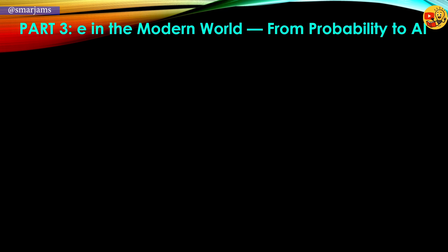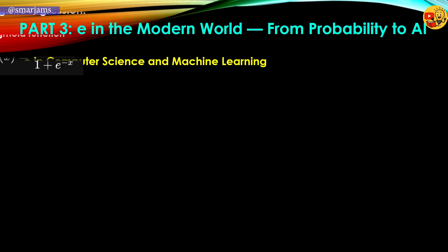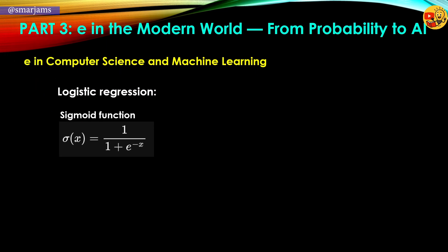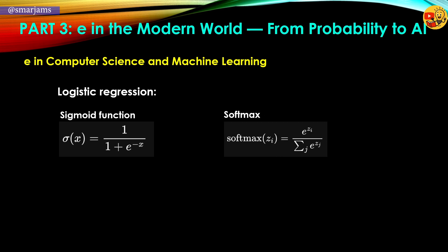In machine learning and artificial intelligence, e shows up even more vividly. The sigmoid function — 1 divided by (1 + e to the negative x) — allows machines to make binary decisions with probabilities. In multi-class classification problems, the softmax function turns raw prediction scores into a smooth probability distribution, using e to the power of each input divided by the sum of all such exponentials.